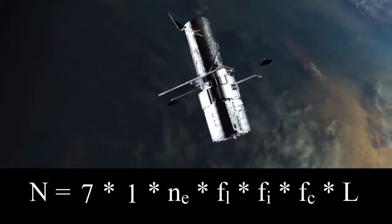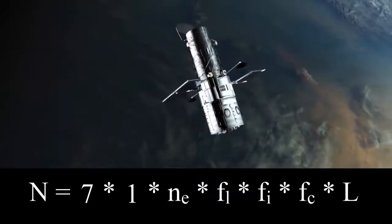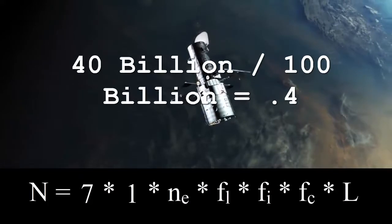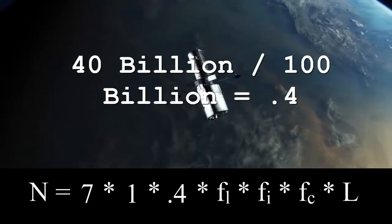According to astronomers' best estimates, there are 250 billion plus or minus 150 billion. So 100 billion here is a conservative number. That means we can plug in 0.4 into NE.